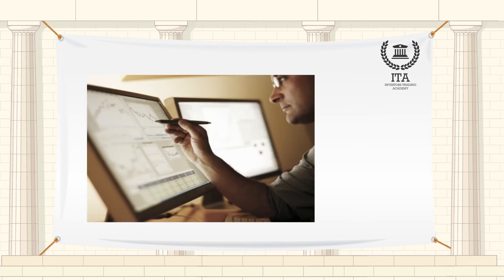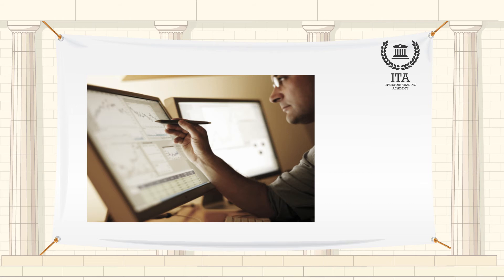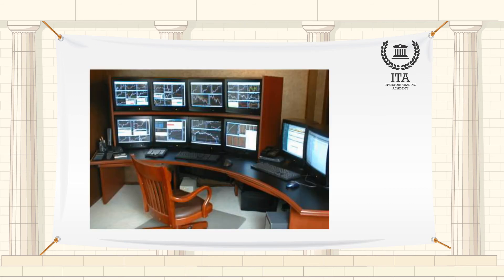Technical analysts also widely use market indicators of many sorts, some of which are mathematical transformations of price and index, often including up and down volume, advance-decline data and other inputs. These indicators are used to help assess whether an asset is trending and, if it is, the probability of its direction and continuation.